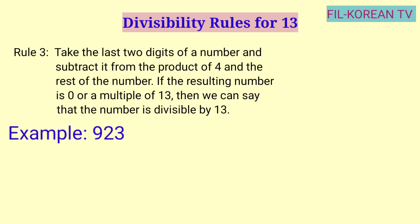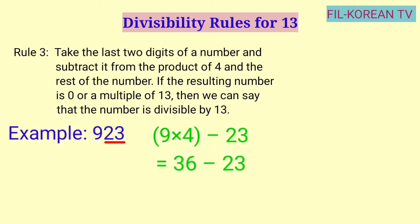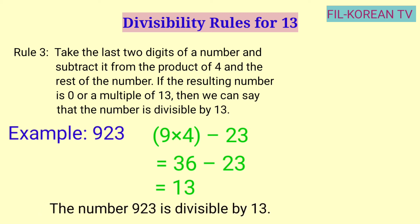Example: 923. Sa 923, ang last 2 digits ay 23. Ngayon yung natitira na lang ay 9. Itong 9, i-times natin ito sa 4. Pagkatapos, i-minus natin dito yung 23. Magiging ganito siya: 9 times 4 minus 23. 9 times 4 equals 36. At i-minus natin sa 36 itong 23. 36 minus 23 equals 13. Ang answer ay 13, at ito ay multiple ng 13. Kaya yung 923 ay divisible by 13.